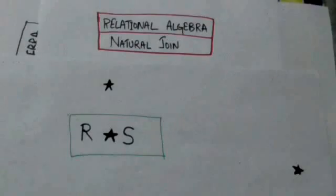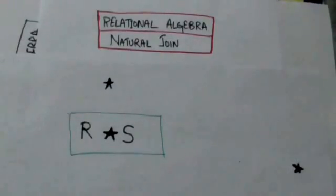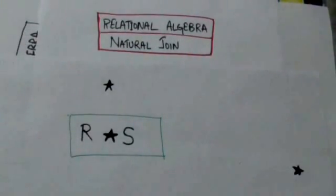The result of this natural join operation will be a relation having tuples formed by combining the tuple of relation R and a tuple of relation S which have same values for attributes that appear in both relations, and finally removing duplicate attributes.